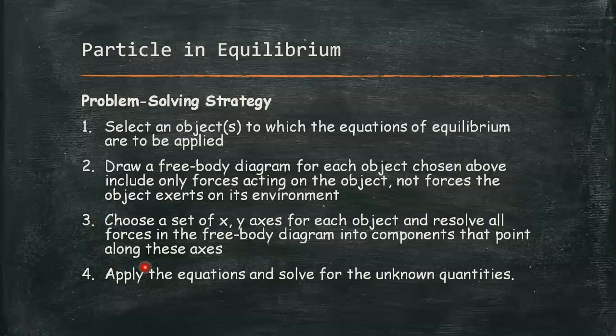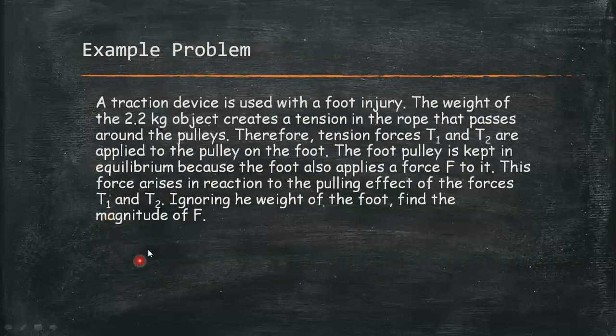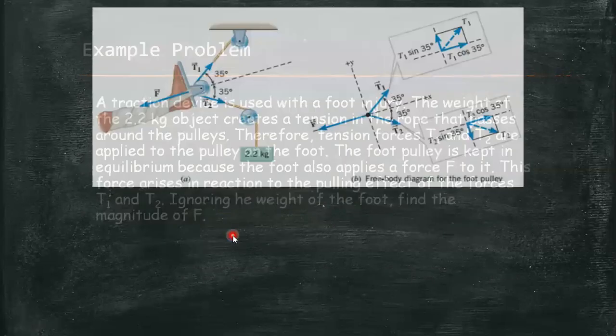Let's have an example problem. A traction device is used with a foot injury. The weight of a 2.2 kilogram object creates a tension in the ropes that passes around the pulleys. Therefore, tension forces T1 and T2 are applied to the pulley on the foot. The foot pulley is kept in equilibrium because the foot also applies a force F to it. This force arises in reaction to the pulling effect of forces T1 and T2. Ignoring the weight of the foot, find the magnitude of F. I already have here a prepared free-body diagram for our problem.